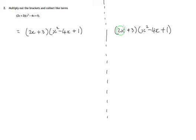So your first move is to multiply each term in the right-hand bracket by the term 2x. 2x times x squared, 2x times negative 4x, 2x times 1. So let's do that.